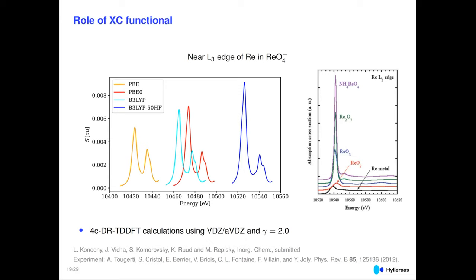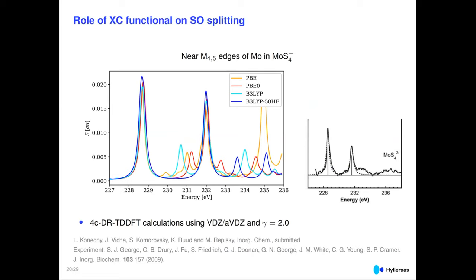Comparing with the experimental spectrum, for rhenium tetroxide it's clear we should use higher than 20% and closer to 50% exact Hartree-Fock exchange. Importantly, the spin-orbit splitting between the M4 and M5 edges — as seen in the molybdenum tetrasulfide complex — does not depend on the amount of Hartree-Fock exchange. It is the onset of the absorption band, not the spin-orbit splitting itself, that changes with exact exchange fraction.